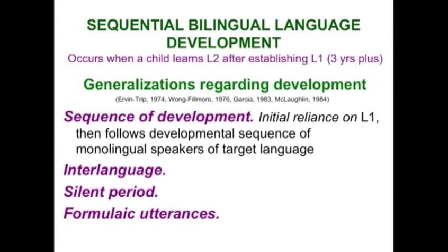My daughter's father was a monolingual sequential bilingual — a monolingual English speaker as a child. His mom said he didn't start speaking until age two and a half or three, but when he started, he spoke in paragraphs. He was unwilling to make the kind of errors you have to make, so he went through a longer silent period and then launched into beautiful language. That's an example of a prolonged silent period even as a monolingual speaker.